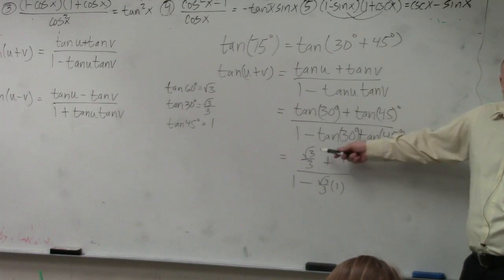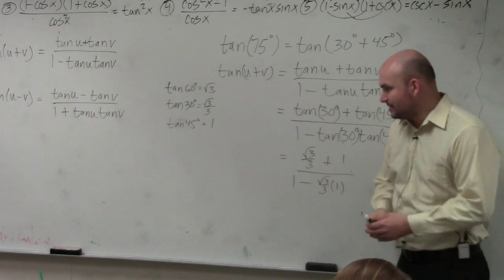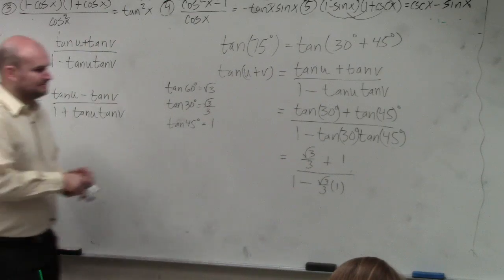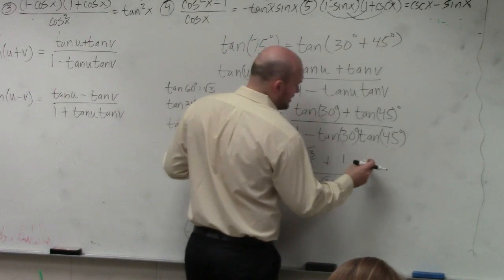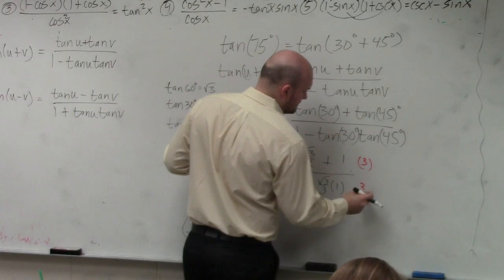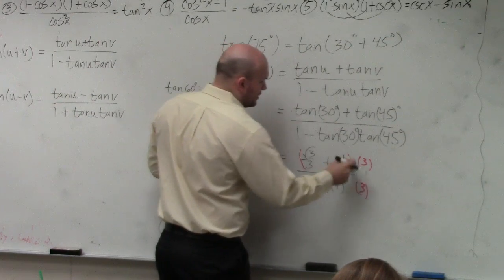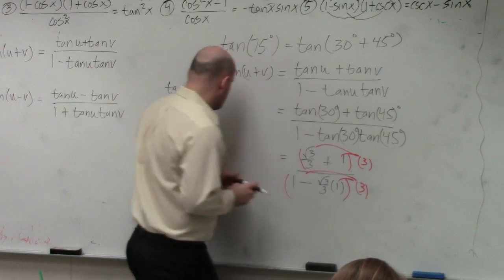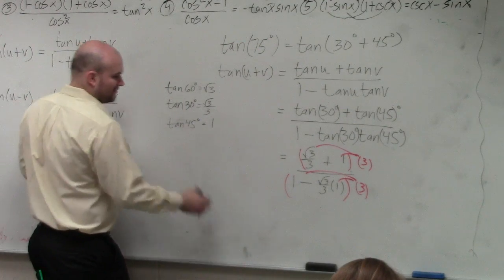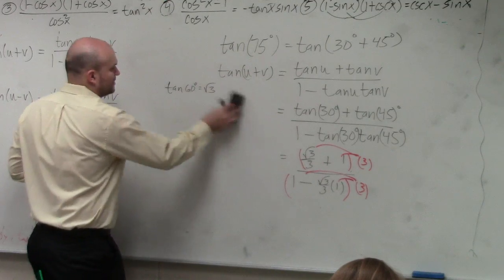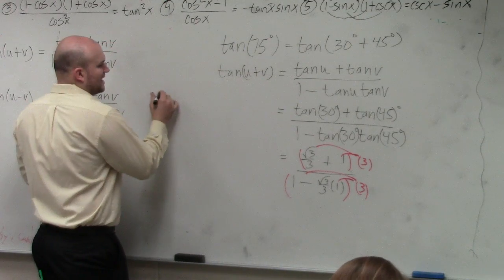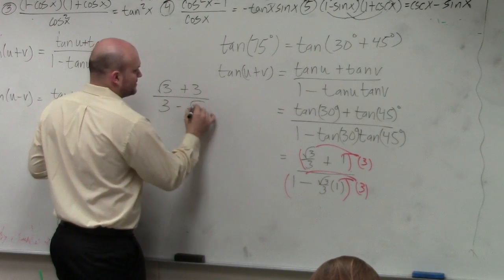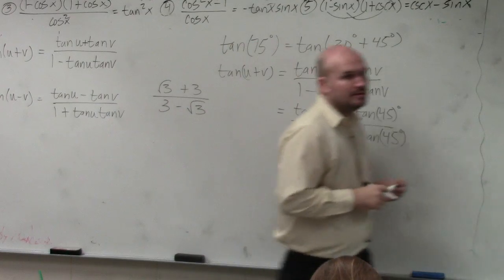So the first thing I would do is I see there's fractions in the numerator and the denominator. The first thing that I would do is multiply by 3 on the numerator and the denominator. Notice that these are binomials. So I'm actually going to have to continue my work over here, because this takes a little bit of work. So I have square root of 3 plus 3 over 3 minus the square root of 3. Correct?